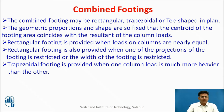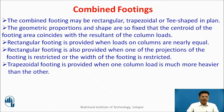The geometric proportions and shapes are fixed so that the centroid of the footing area coincides with the resultant of column loads — this is very important. Rectangular footing is provided when loads on columns are nearly equal, and also when one of the projections or width of the footing is restricted. Trapezoidal footing is used when one column load is much heavier than the other.